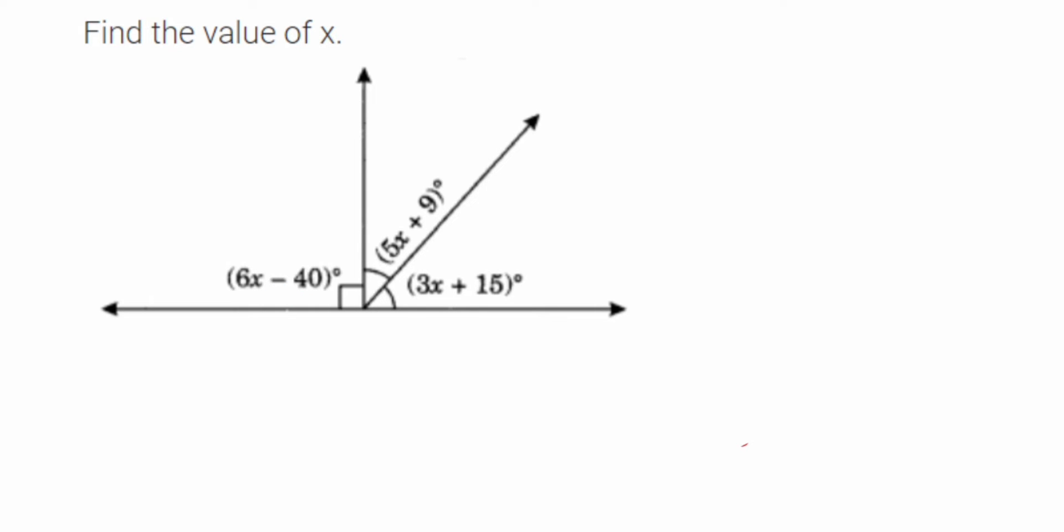If I add these three angles, it should be equal to 180 degrees. So I'm going to add them up. The first angle is 6x minus 40, then the second angle is 5x plus 9, and the third angle is 3x plus 15. This is equal to 180 degrees.